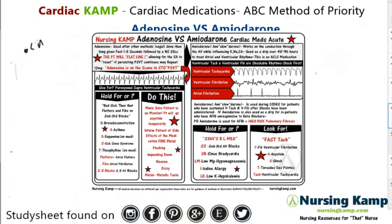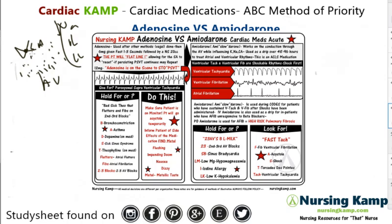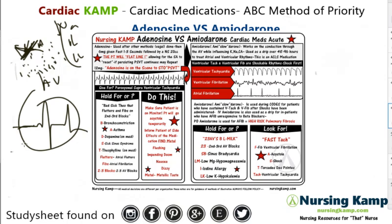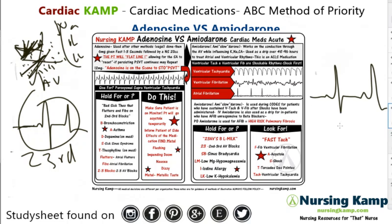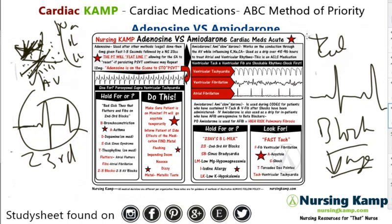From the SA to the AV node there's a problem, so we slow down this conduction through sodium, potassium, and chloride channels. As it slows down, hopefully the SA node wakes up and we see a P wave return. Amiodarone is generally held for patients with second or third degree heart block, because there's an actual problem with the P wave — it's firing but not at the right time. It's also held if the patient has low magnesium, or if they have an iodine allergy, since amiodarone contains iodine.